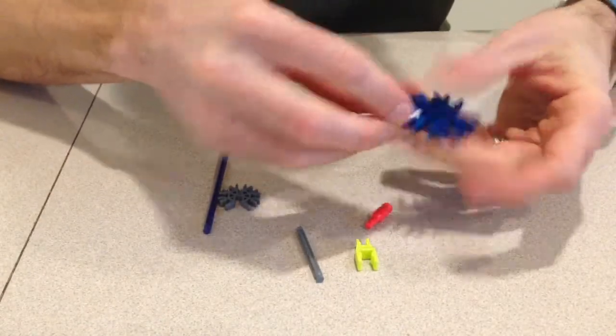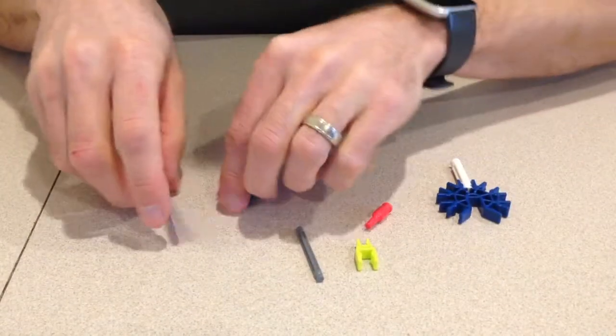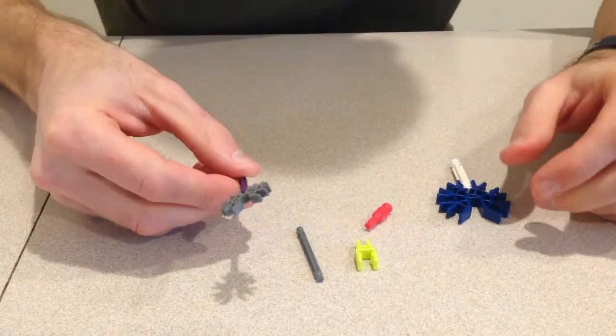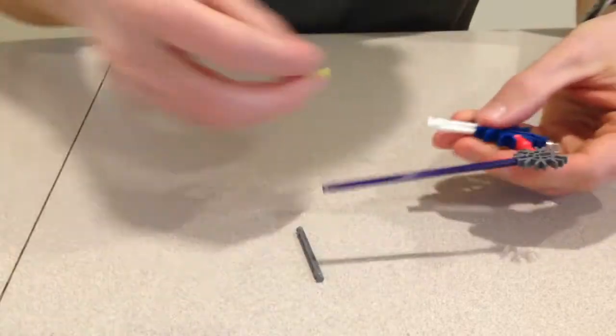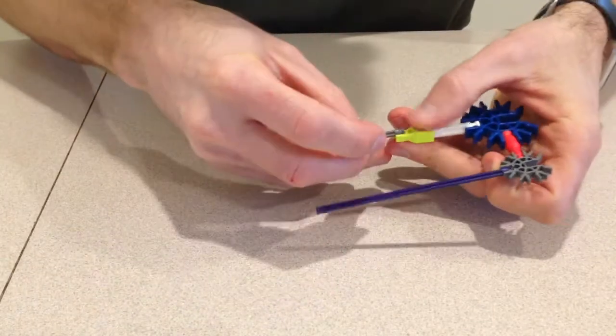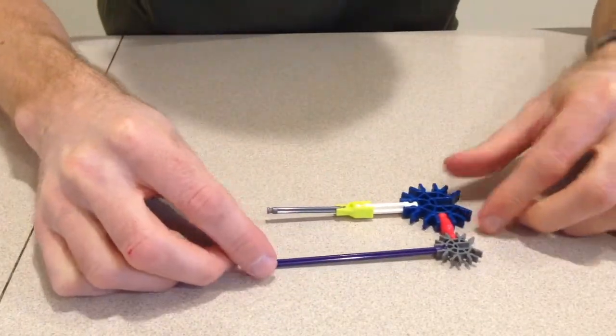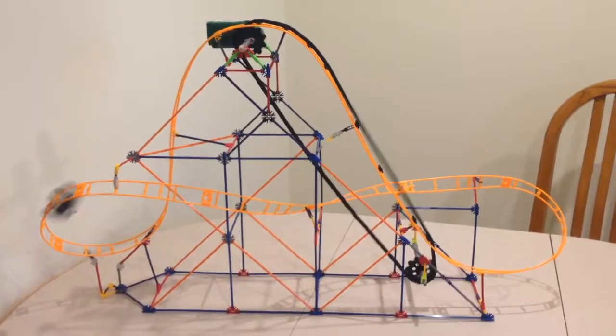K'nex pieces just snap together and they come in regular and micro sizes. Adapters are needed to connect together the regular sizes and the micro pieces, but they do allow you to build some really cool things.